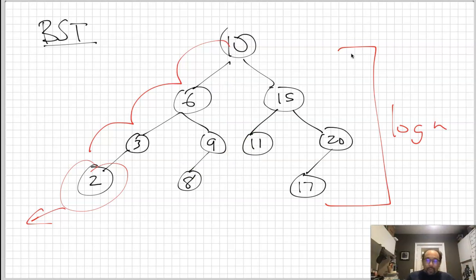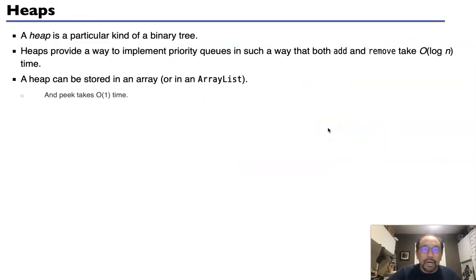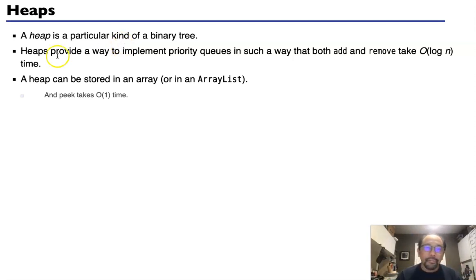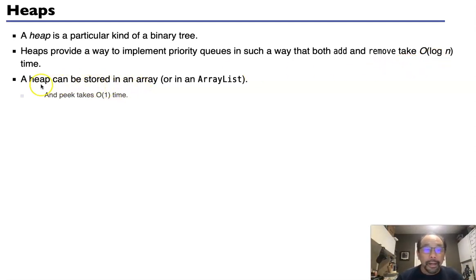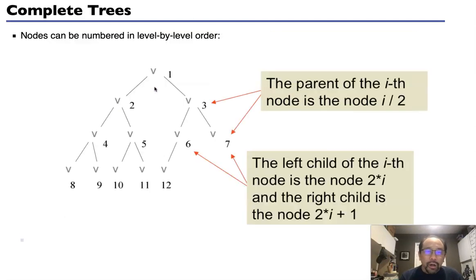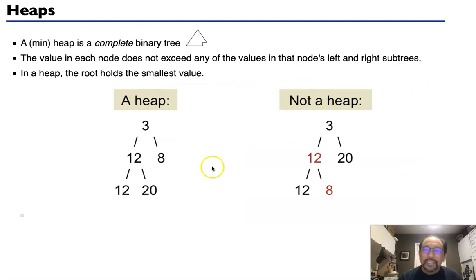So what can we do? Today we're going to talk about heaps, which is a way of solving this problem. A heap is a kind of binary tree, but it's not a binary search tree — it has a different property. Heaps are a way of implementing a priority queue that allows us to both add and remove an object in O(log N) time. We're going to look at how we can implement a heap using an array.